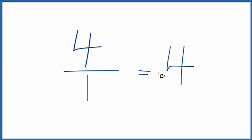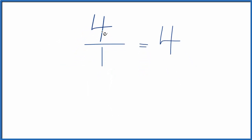To get an equivalent fraction for 4, or 4 over 1 here, we can multiply the numerator and the denominator by 2. 2 times 4, that gives you 8, and 2 times 1, that gives you 2.